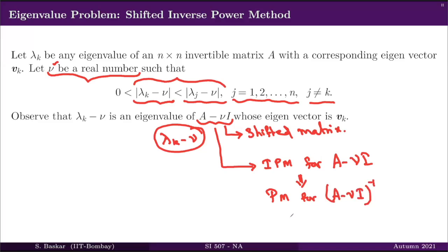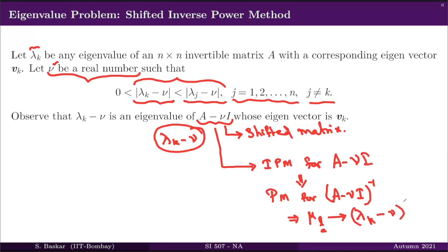That will lead to a sequence mu_l converging to (lambda_k - nu) inverse. The inverse power method sequence mu_l will converge to this value if all the other hypotheses are satisfied by (A - nu·I) inverse. So that is the basic idea of the shifted inverse power method: we apply the inverse power method to A - nu·I to approximate eigenvalue lambda_k - nu.